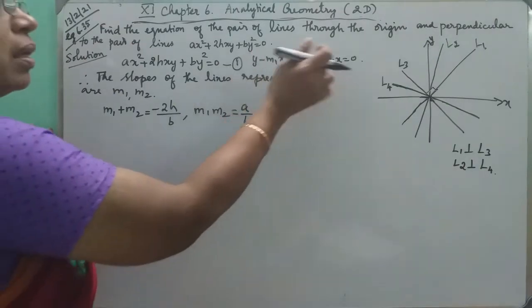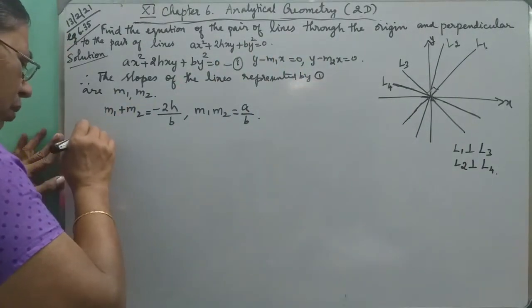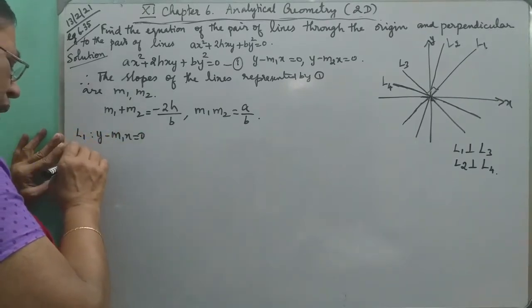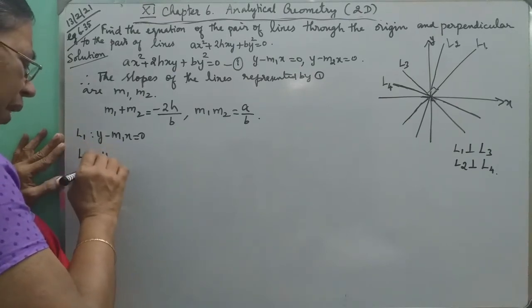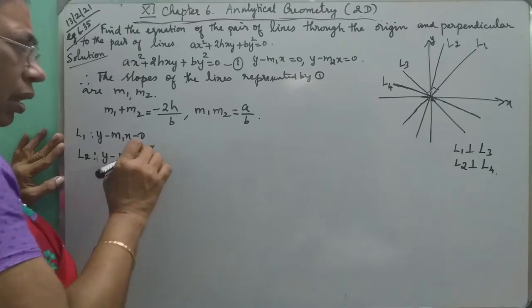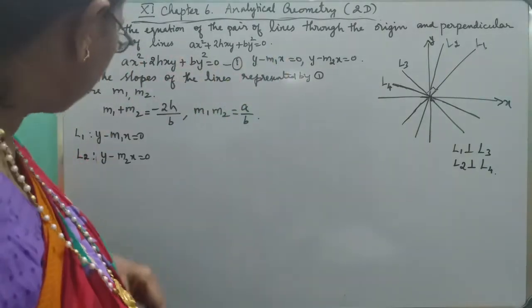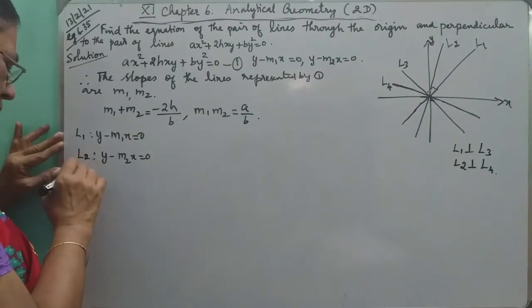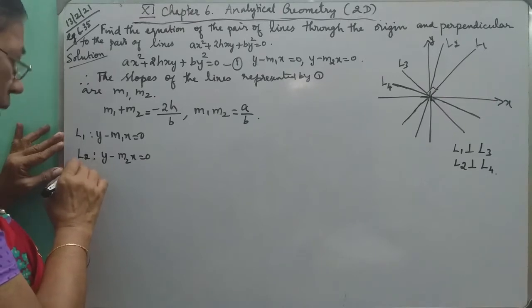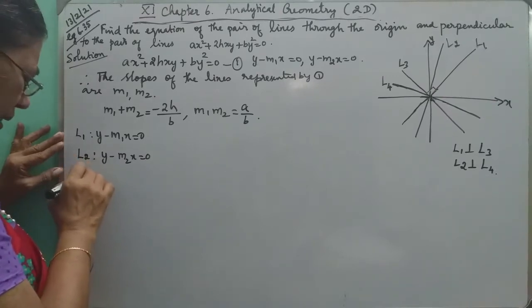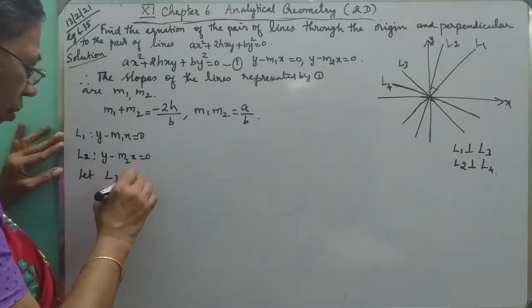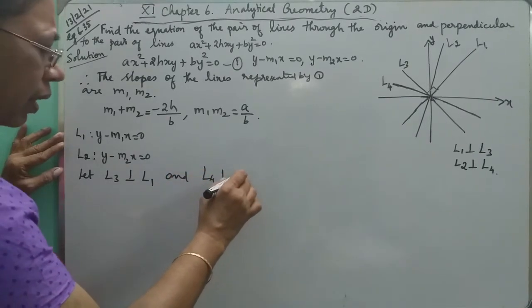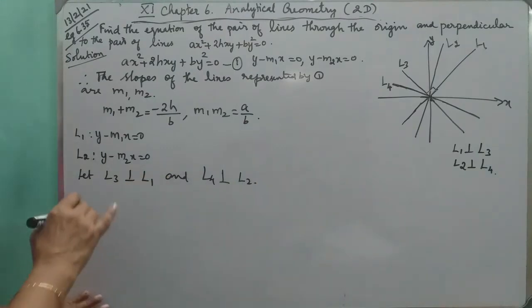Now, the lines are perpendicular. So, L1 is equal to y minus m1x is equal to 0. And the line y minus m2x is equal to 0. Let L3 is perpendicular to L1 and L4 is perpendicular to L2.